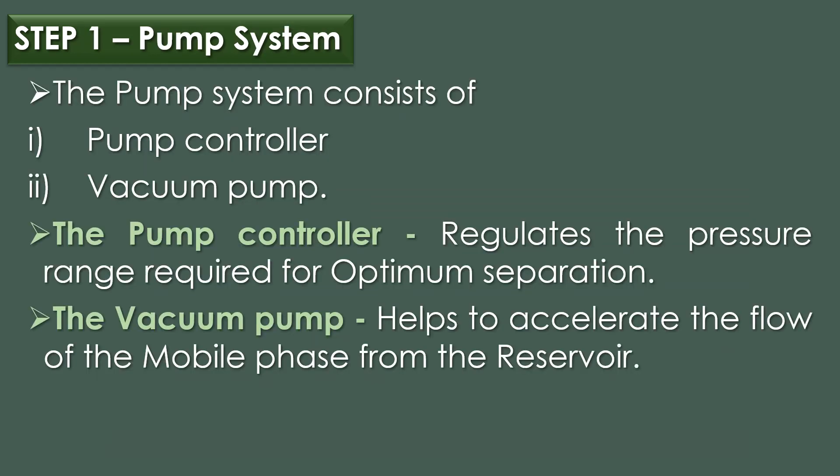The first step is the pump system, which consists of two things: a pump controller and a vacuum pump. The pump controller regulates the pressure and the pressure range required for optimal separation, and the vacuum pump helps to accelerate the flow of the mobile phase from the reservoir.